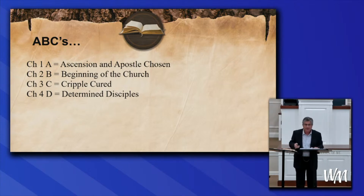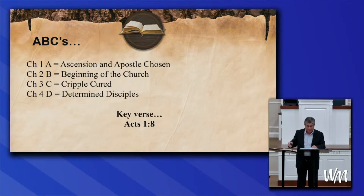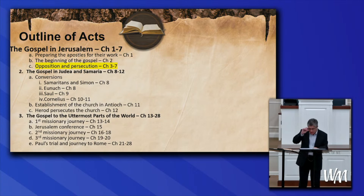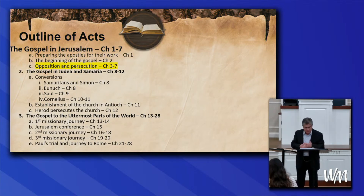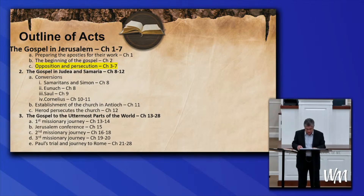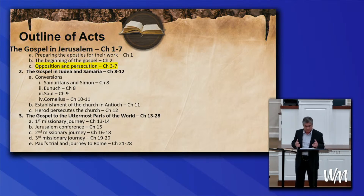Let's look at the outline we've been keeping based on our key passage in Acts 1:8. We're going through this quarter and the next. The first seven chapters of Acts is the gospel in Jerusalem; chapters 8 through 12 is the gospel in Judea and Samaria; and 13 through the remainder is the gospel to the uttermost parts of the world. Right now we're in chapter 4, which is a section about opposition and persecution endured by the disciples.